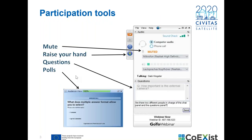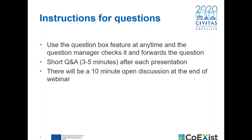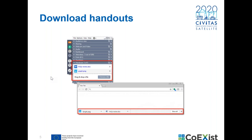There will also be some handouts available for download. You can use the question box at any time — we will have two moments where questions are taken: a three-to-five minute session after each presentation, and a ten-minute open discussion at the end of the webinar. You will also find handouts available for download including this introductory and audience guide presentation and some other documents from Coexist.